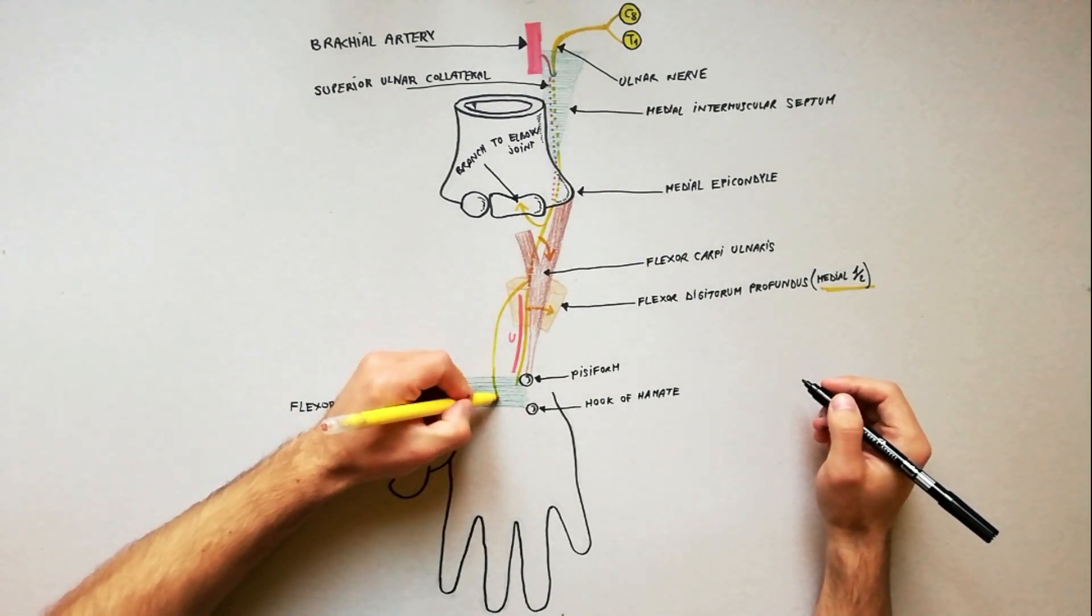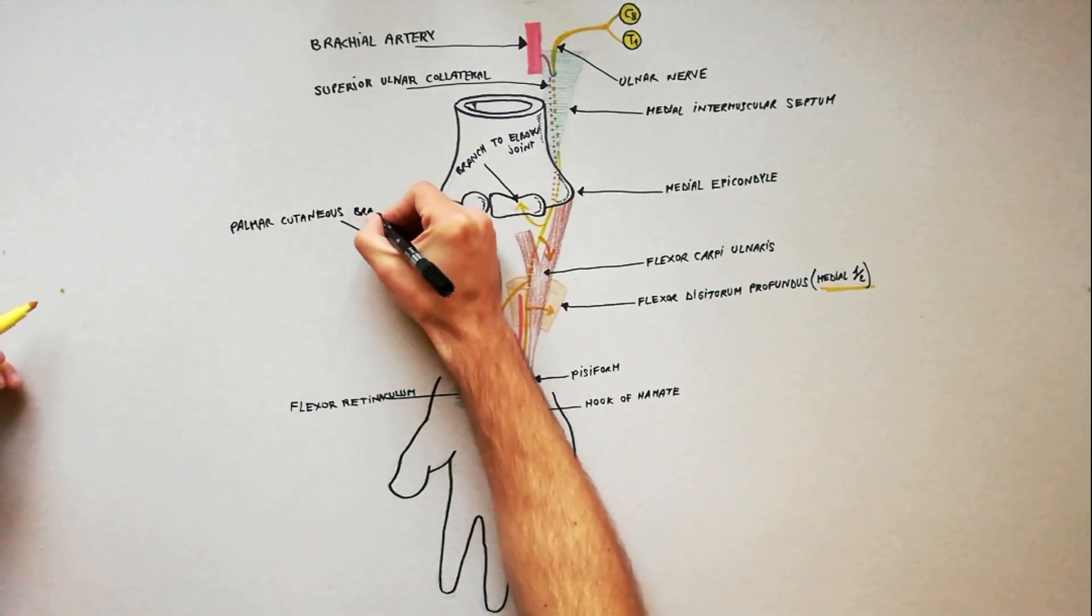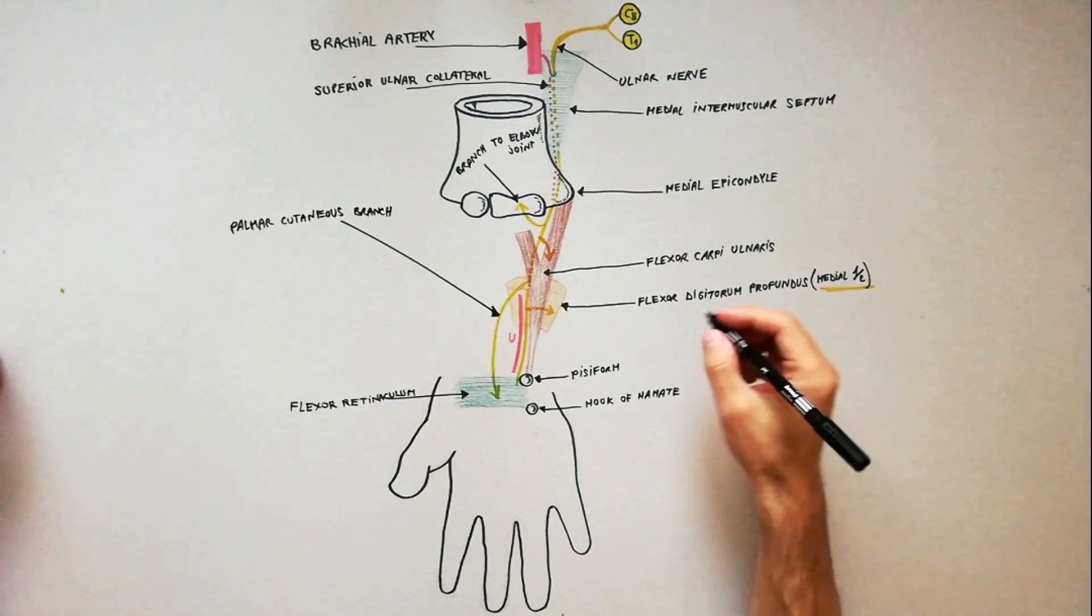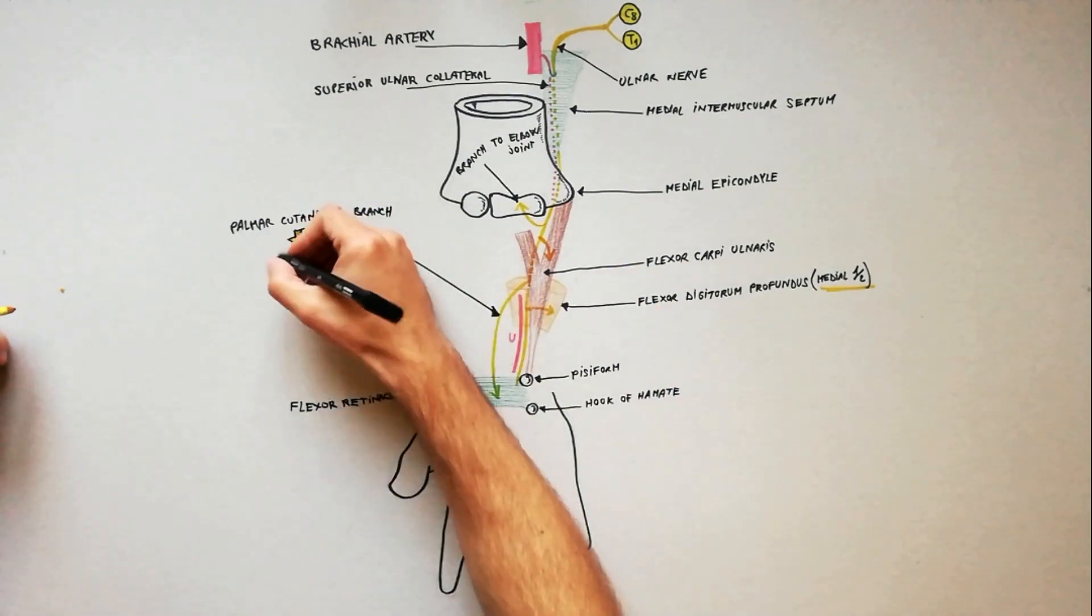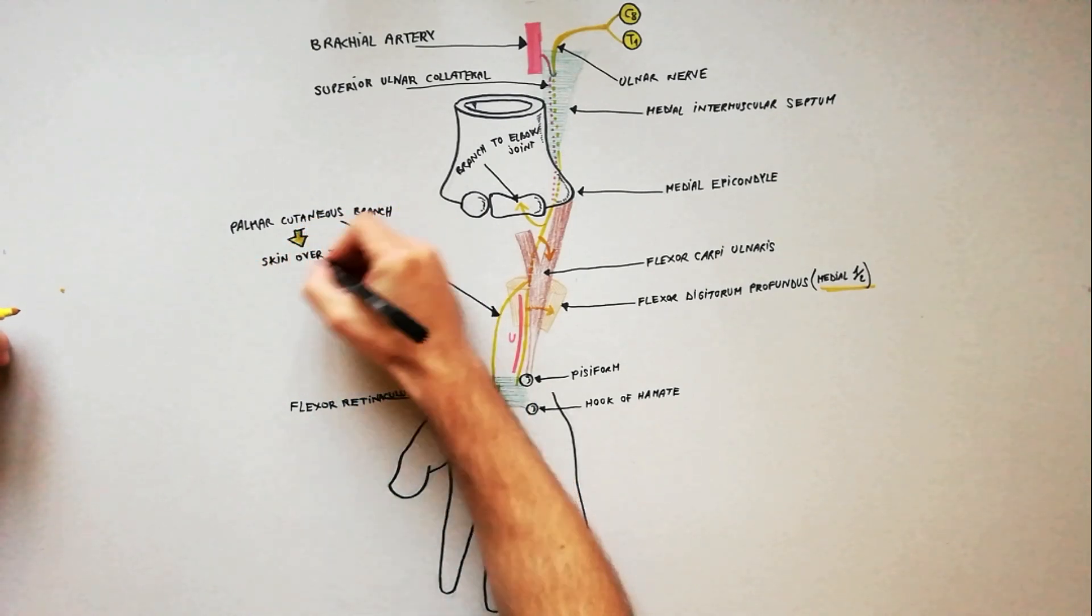In the mid forearm, it gives off palmar cutaneous branch which enters the palm superficial to the flexor retinaculum to provide sensory innervation to the skin over the hypothenar eminence.